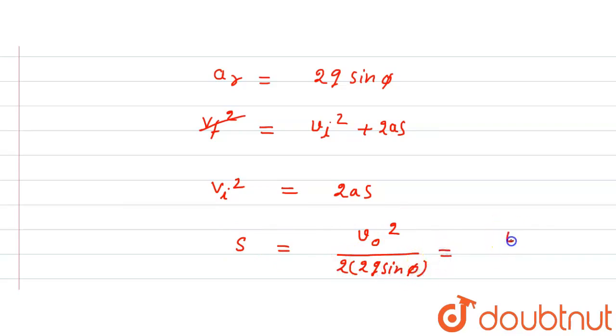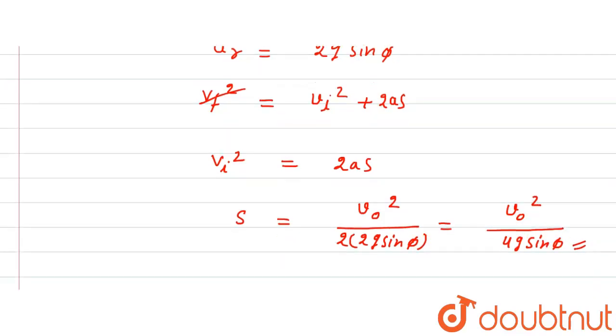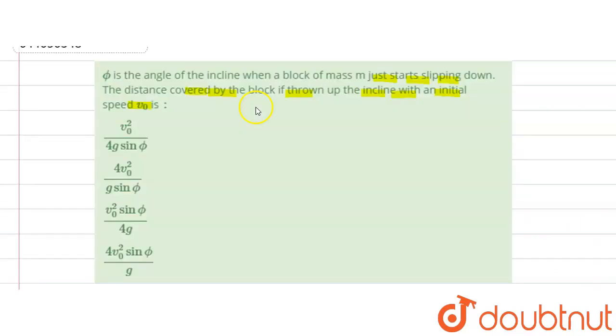Therefore s = v₀² / (4g sinφ). Checking the options, the first option is correct. That is the solution to this question.